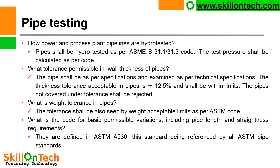What is the weight tolerance in pipes? The tolerance shall also be assessed by weight acceptable limits as per ASTM codes. What is the code for basic permissible variations including pipe length and straightness requirements? They are defined in ASTM A530, this standard being referenced by all ASTM pipe standards.